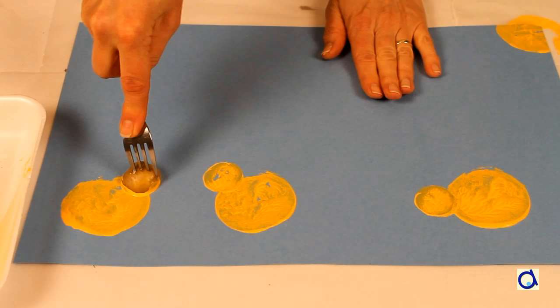Cut a small potato in half and proceed in the same way as with the big potato to paint the heads of all the chicks.